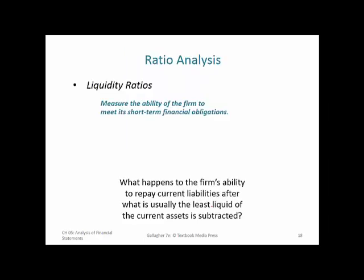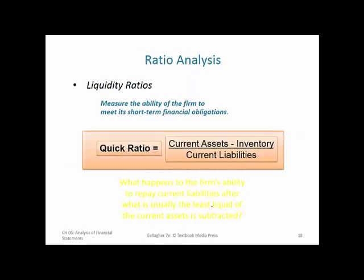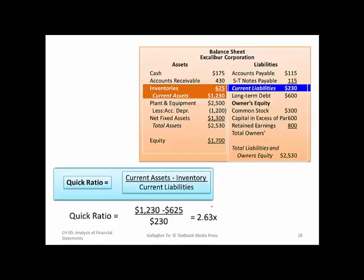Closely related is the quick ratio, which is the current ratio except we strip out inventory from current assets. The rule of thumb is two or more is healthy. Once we strip out inventory, we're dealing with about $600 million over $230 million, giving a quick ratio of 2.63. On the surface that looks fairly healthy, but again we want to compare to ourselves over time and to competitor firms.